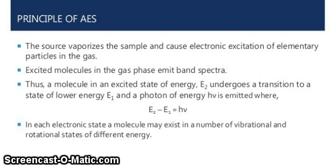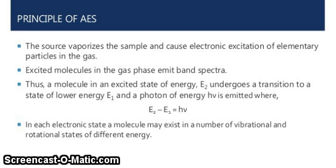The third point is that a molecule in an excited state of energy E2 undergoes a transition to a state of lower energy E1, and a photon of energy is emitted where E2 minus E1 is equal to hν. In each electronic state, a molecule may exist in a number of vibrational and rotational states of different energy.